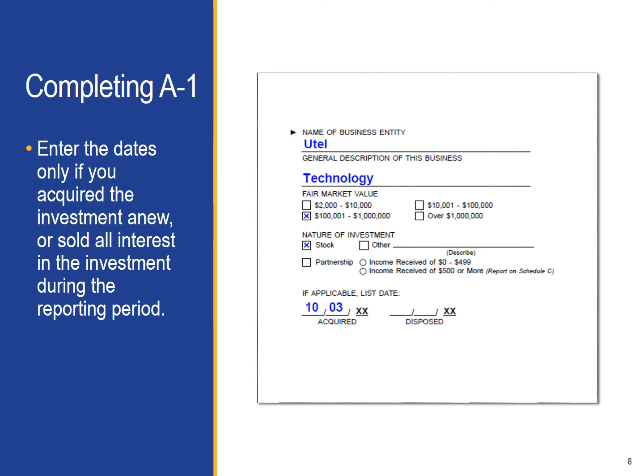These dates are important because they remind you when you may have to recuse yourself from a decision. For instance, if a contract goes out for bid and in the last 12 months you've purchased shares of stock from one of the bidding contractors, you may not be able to participate in decisions about the contract. If you are not sure if you can participate in a decision because of your investments, send your questions to us at advice@fppc.ca.gov.